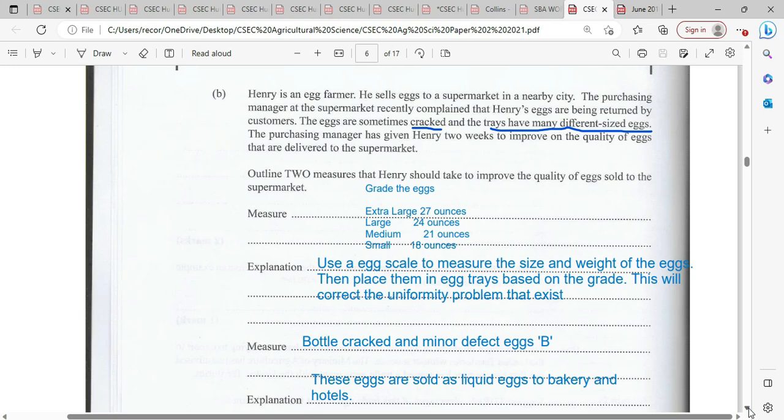Another measure. He could bottle the cracked eggs and those with minor defects as grade B eggs. These eggs are sold as liquid eggs to bakeries and hotels. Rather than sending the cracked eggs to the supermarket, sell them as bottled eggs.